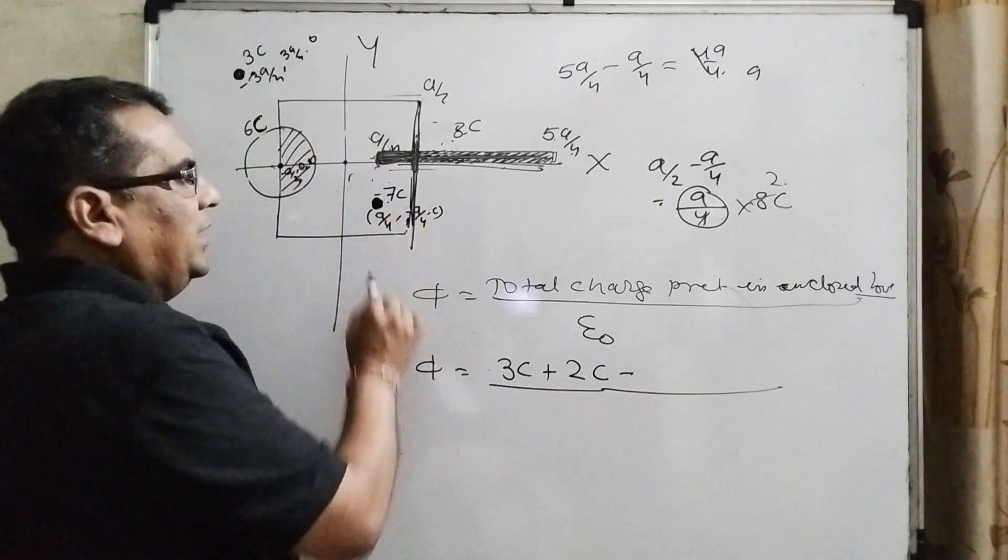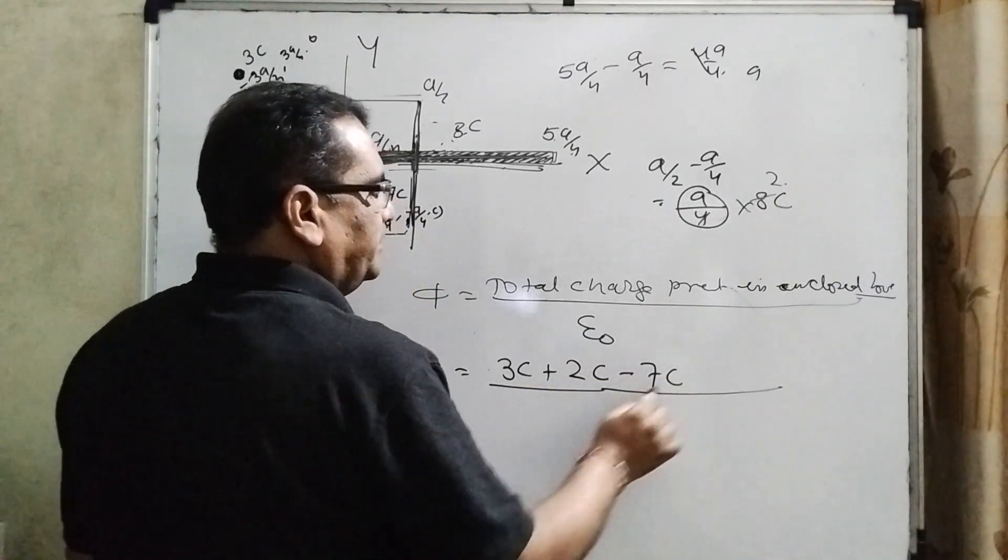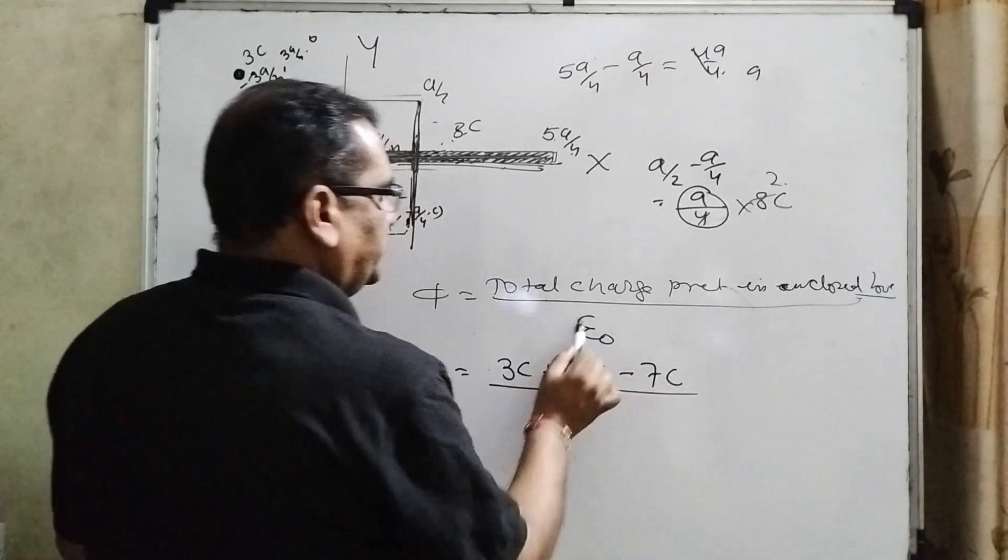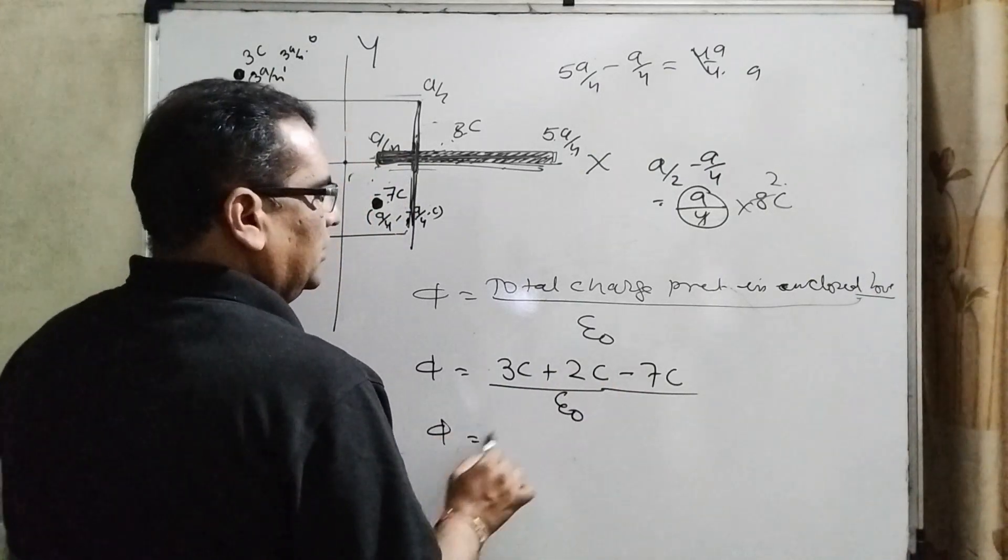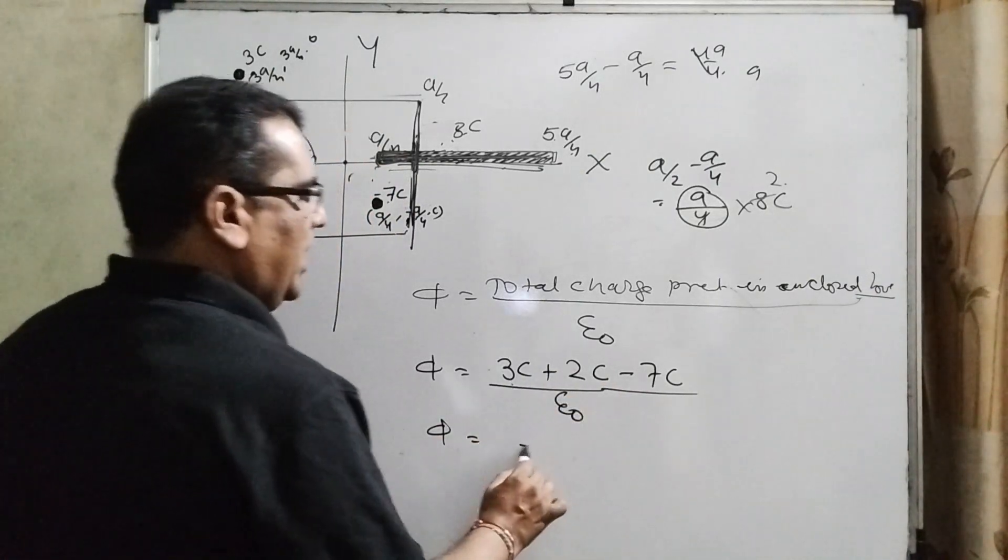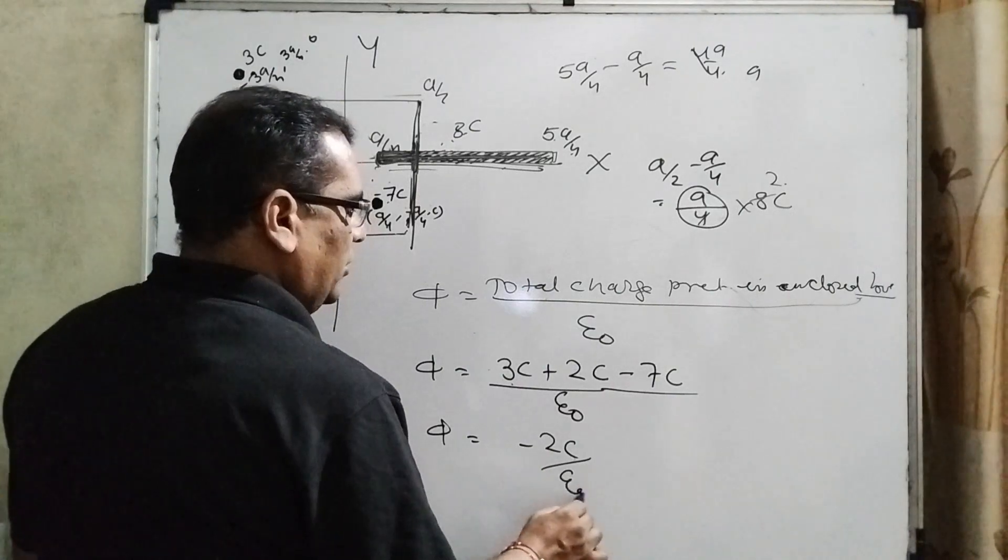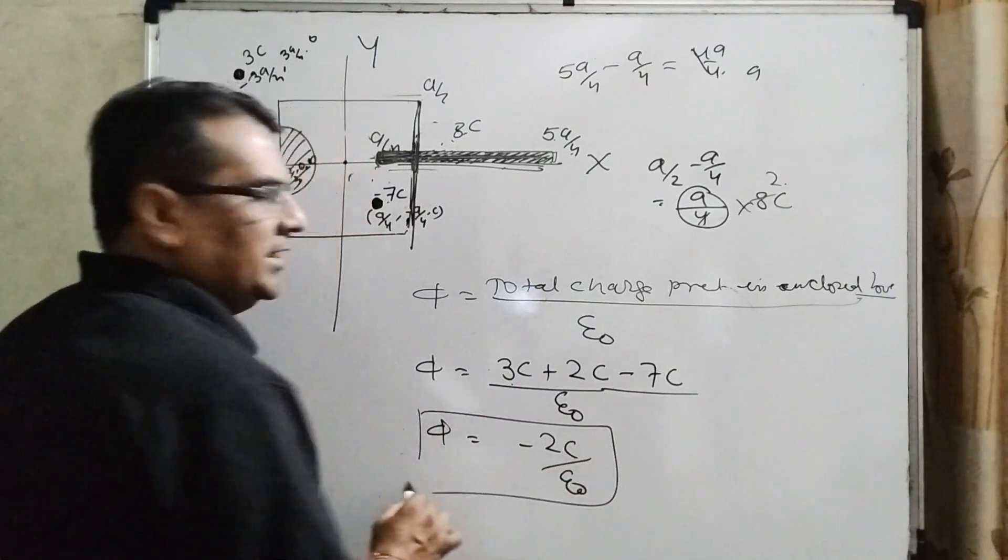And here, -7C. Now, 1/ε₀. 3 + 2 - 7 = -2C/ε₀. Now, it is the correct answer.